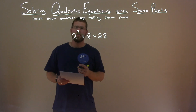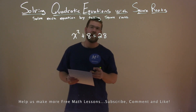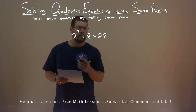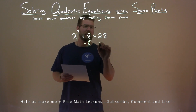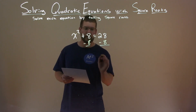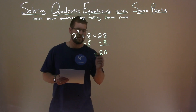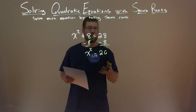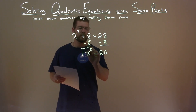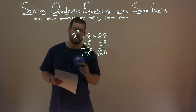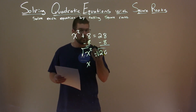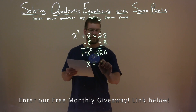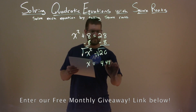We're given this problem: x squared plus 8 equals 28, and we want to solve this equation by taking the square root. We first have to get x squared by itself, so I'm going to subtract 8 from both sides. That leaves 28 minus 8, which is 20, giving us x squared equals 20. We need to take the square root of both sides to get x completely by itself. The square root of 20 is approximately 4.472.